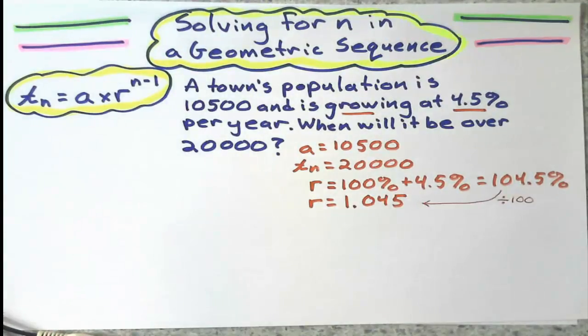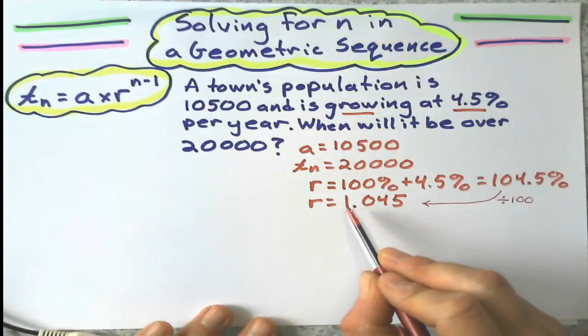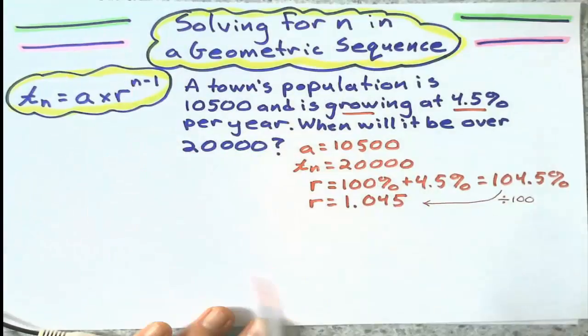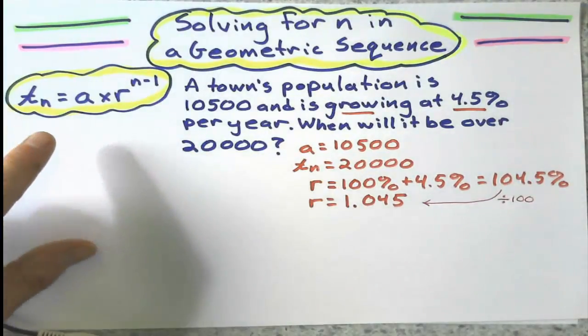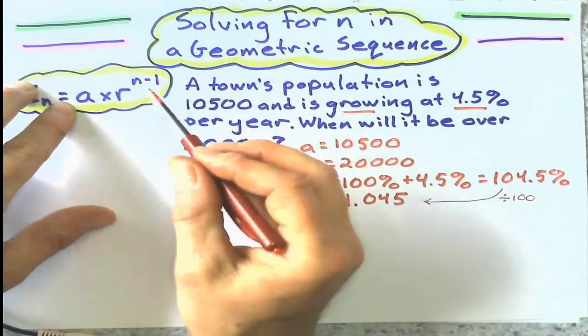And for those of us who forgot how to get a percent to a decimal, we simply divide by 100. Now I think I have everything I need to solve for n. I've got the general term 20,000. I'm going to substitute all of these bits into that equation and see if I can get this.